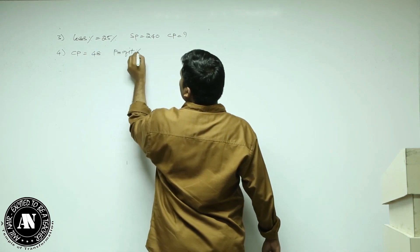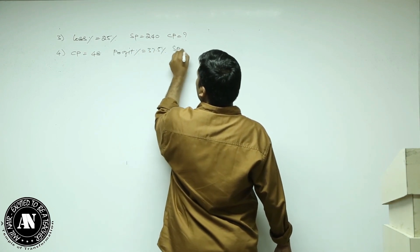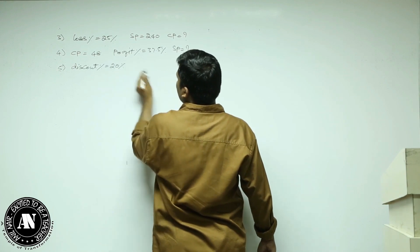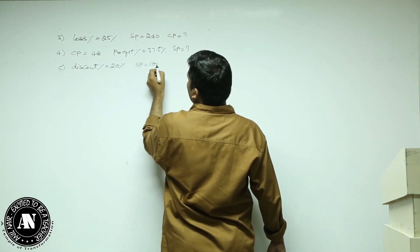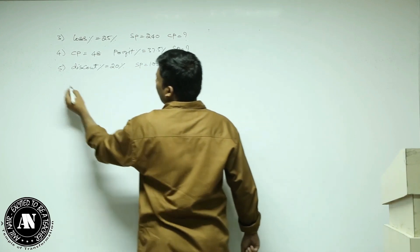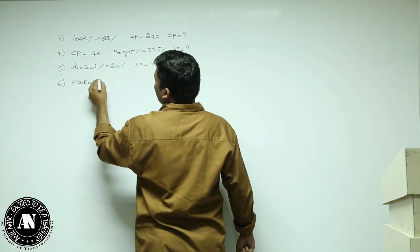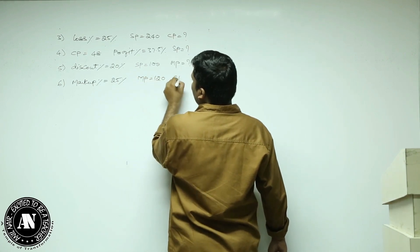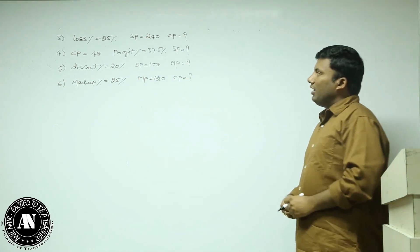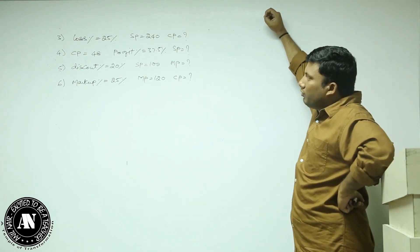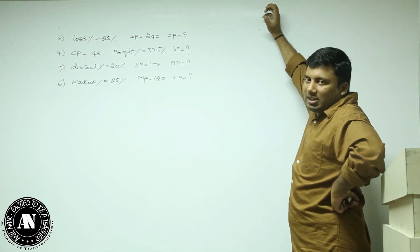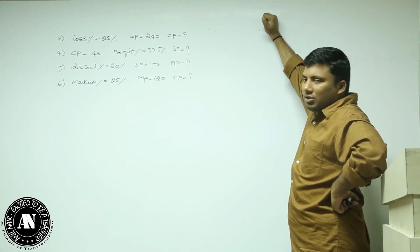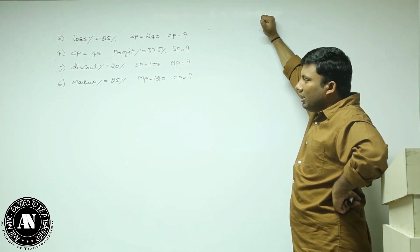Fourth: profit percentage is 37.5%, what is the selling price when cost price is 48? Fifth: discount percentage is 20%, selling price is 100, what is market price? Sixth: markup percentage is 25%, marked price is 120, what is cost price? These are all very easy questions.